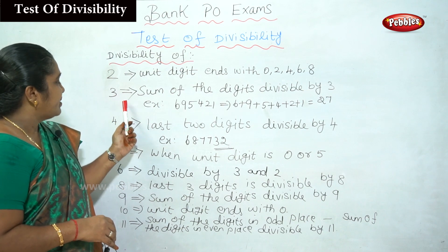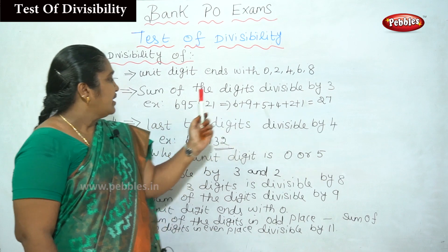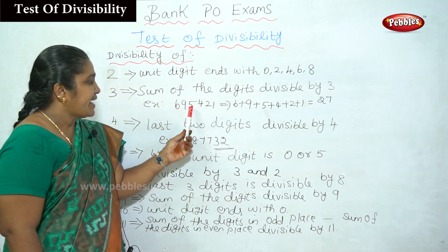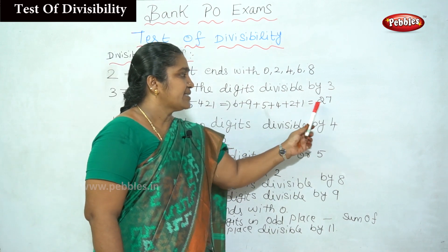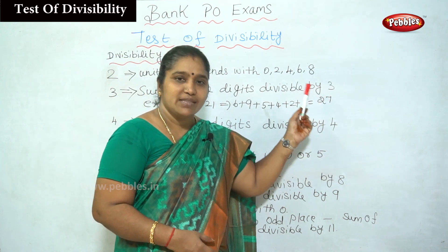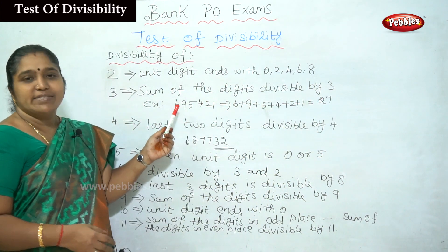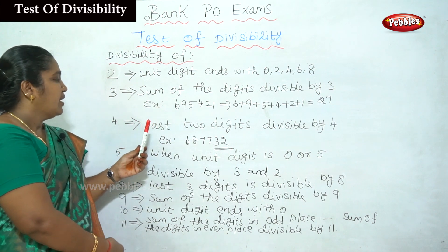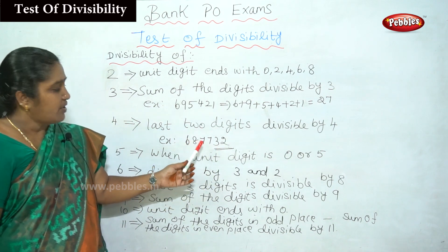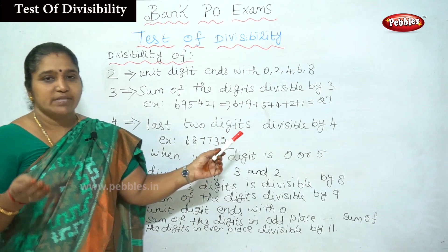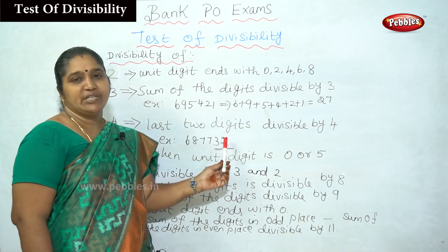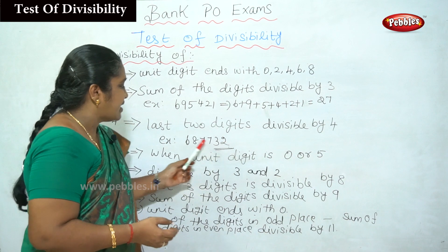For divisibility by 3: sum all the digits; if the sum is divisible by 3, the number is divisible by 3. For example, 695421 — the sum of digits is 27, which is divisible by 3, so the number is divisible by 3. For divisibility by 4: check if the last 2 digits are divisible by 4. For example, in 6877732, the last two digits are 32, which is divisible by 4.